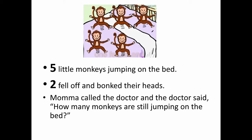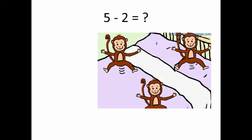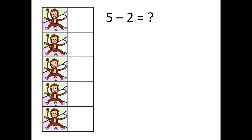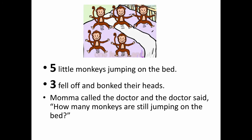Five little monkeys jumping on the bed, two fell off and bonked their heads. Mama called the doctor and the doctor said, how many monkeys are still jumping on the bed? So if two of the five monkeys fall off and bonk their heads, how many are left? You're right — five minus two is the same as three.